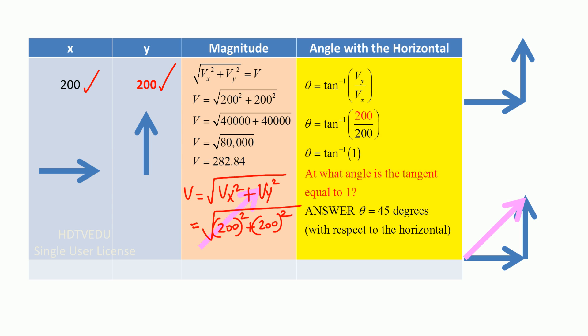And what do we get? Square root of 80,000, which is 282.84. So what is the magnitude of the vector? 282.84. So horizontally we have 200, vertically we have 200. And now you have 282.84 at an angle. So now we need to know how to get that angle.